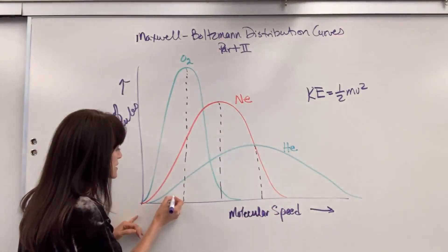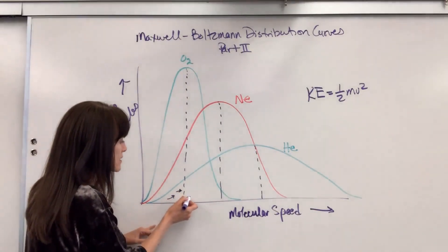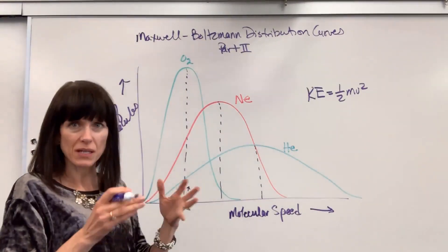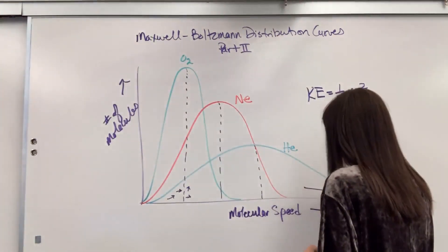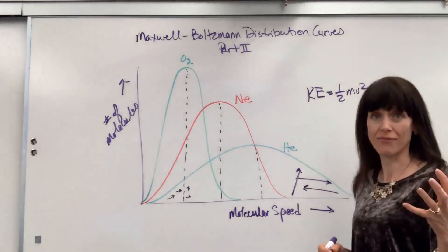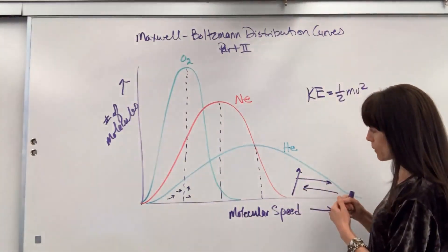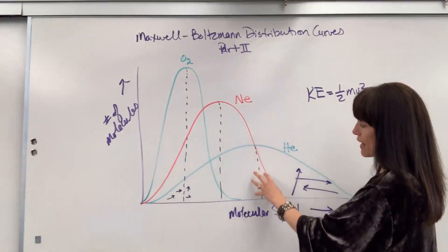Down here you're going to have really slow speeds. If I use vectors to represent this, I would use little arrows to show the speed of the helium. But then here we're going to have super fast, and I would use long vectors to represent super fast. And then in the middle, I have that average speed.